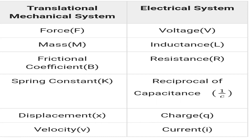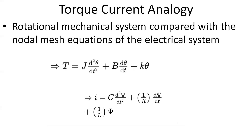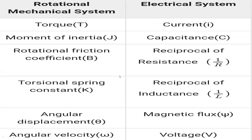Similarly, there is a torque current analogy for the rotational mechanical system. Comparing the rotational mechanical system with the nodal equations of the electrical system — where t equals J·d²θ/dt² plus b·dθ/dt plus k·θ — we get: torque is analogous to current, moment of inertia is analogous to capacitance, rotational friction coefficient b is analogous to reciprocal of resistance, torsional spring constant k is analogous to reciprocal of inductance, angular displacement theta is analogous to magnetic flux, and angular velocity is analogous to voltage.